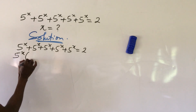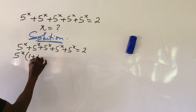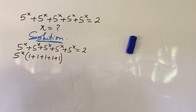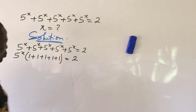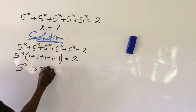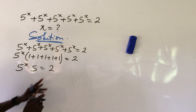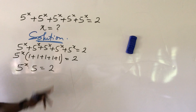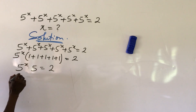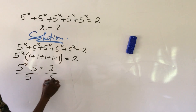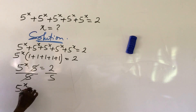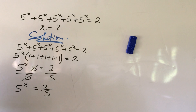So if we do that, we're going to have 5 to the power of x, bracket 1 plus 1 plus 1 plus 1, bracket everything equal to 2. This will give us 5 to the power of x times 4, but summing those ones gives us the coefficient. So we have 5 to the power of x dot 5 equal to 2. From here, we divide through by 5.